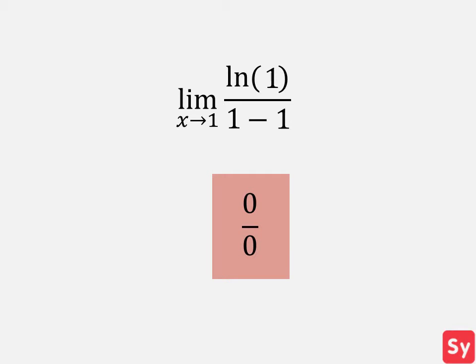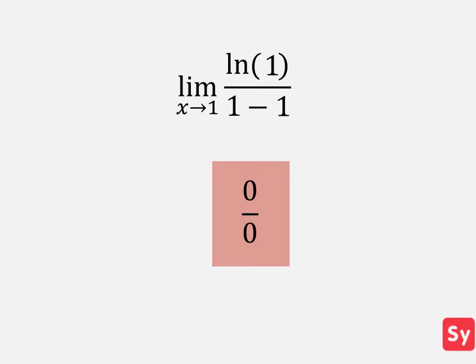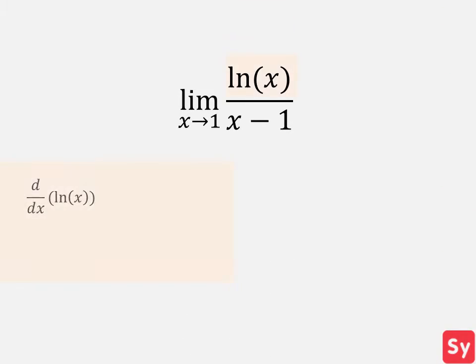So, let's try L'Hopital's rule. We'll first take the derivative of the numerator, ln of x, and we'll get 1 over x.